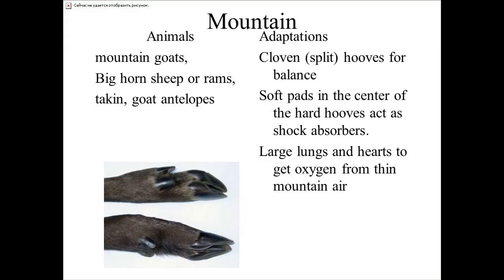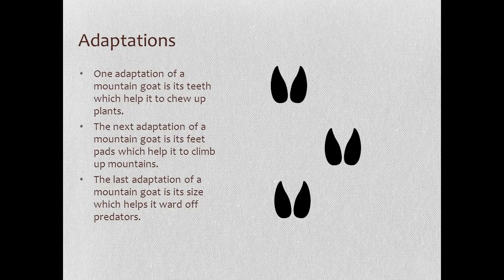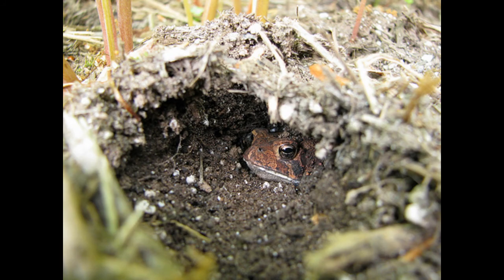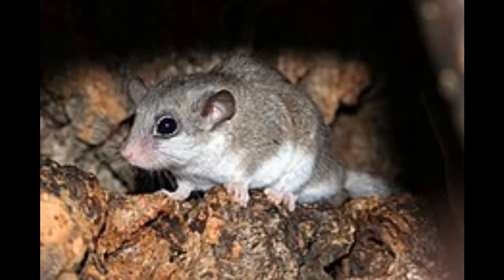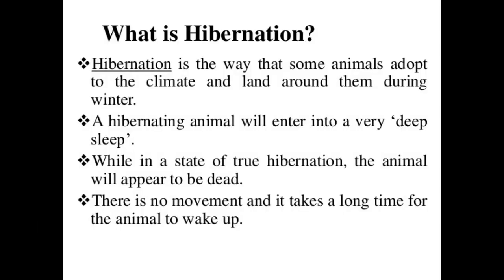The mountain goat has strong hooves that help it climb on rocky and sloped surfaces. They have small ears and nose which reduce heat loss from the body. Living things are most active within a certain temperature range and become slow if the temperature rises or lowers. Some animals such as frog, hedgehog, and dormouse go to sleep throughout the winter to protect from the severe cold weather. This process of undergoing sleep throughout the winter is called hibernation.